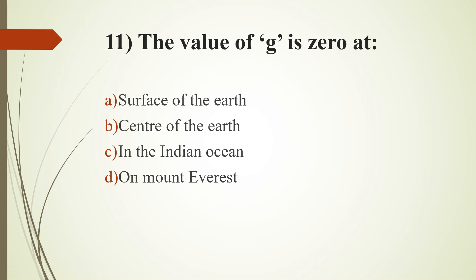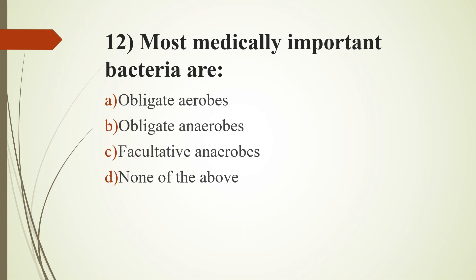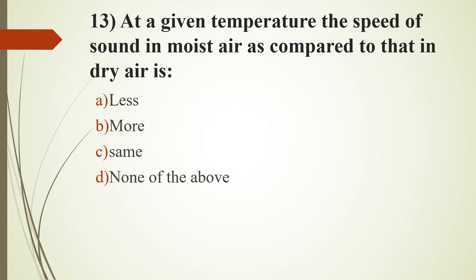11th question. The value of G is 0 at: option A surface of the earth; option B center of the earth; option C in the Indian Ocean; option D on Mount Everest. Answer is option B center of the earth. 12th question. Most medically important bacteria are: option A, obligate aerobes; option B, obligate anaerobes; option C, facultative anaerobes; option D, none of the above. Answer is option C, facultative anaerobes.